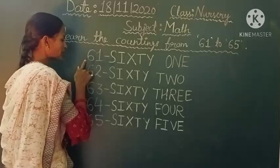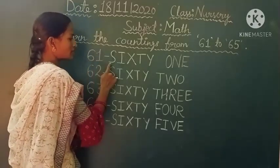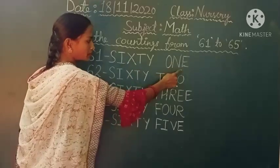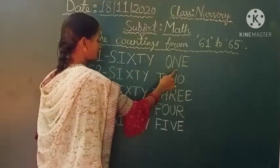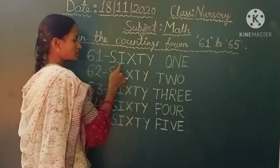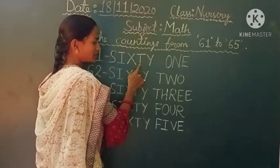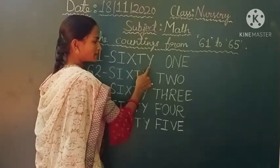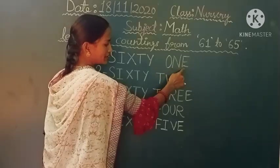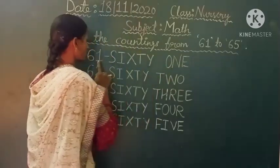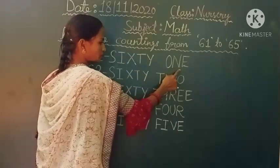First is 61. 61. S-I-X-T-Y. 60. T-W-O. 61. 61. Okay students?